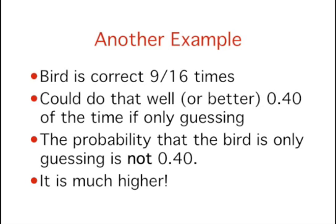The bird is correct on 9 of 16 choices. From the binomial distribution, we can compute that the probability that someone only guessing would be correct 9 or more times out of 16 is 0.40. Since a bird who is only guessing would do as well as this trained bird 40% of the time, these data do not provide convincing evidence that the bird has any special ability.